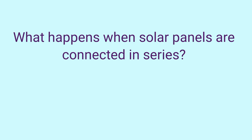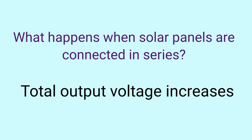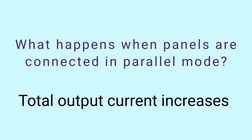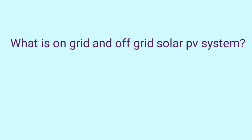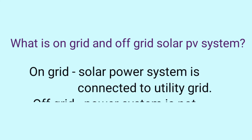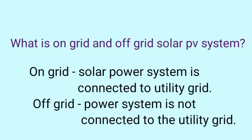What happens when solar panels are connected in series? In this case the total output voltage will increase. What happens when solar panels are connected in parallel? Here the total output current will increase. What do you mean by on-grid and off-grid solar PV system? In on-grid, the solar power system is connected to the utility grid, whereas in off-grid it will not be connected to the utility grid.